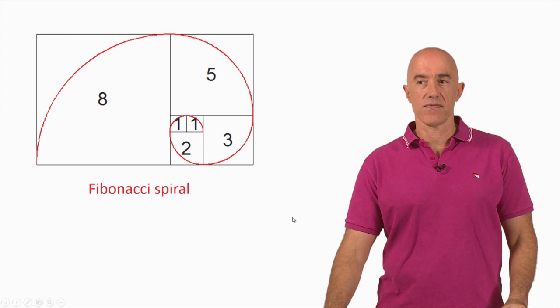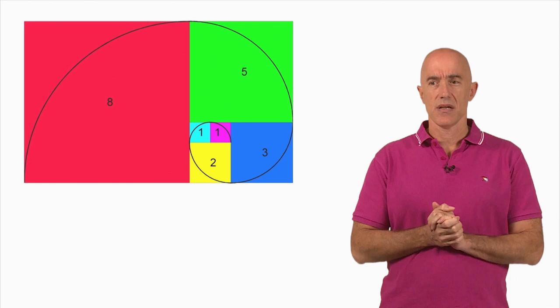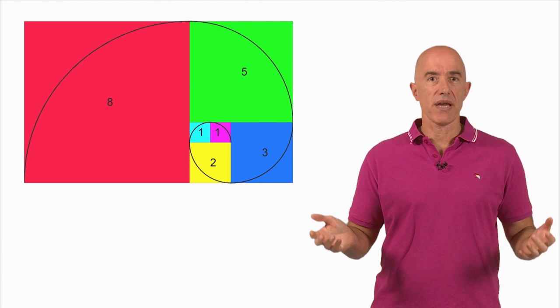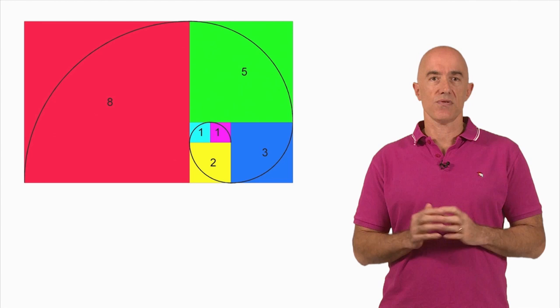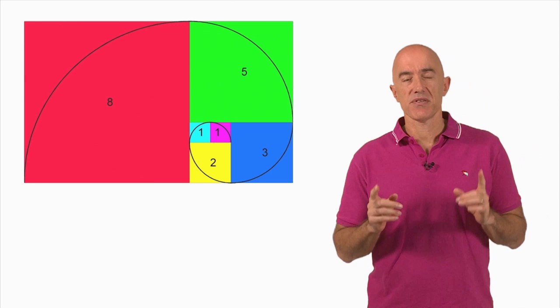I colored this figure to make it the icon of this course. I think this is one of the prettiest figures you can see in mathematics, illustrating both the Fibonacci numbers and an equation — that the sum of the squares of the Fibonacci numbers equals the area of the rectangle — and also illustrating a spiral called the Fibonacci spiral.